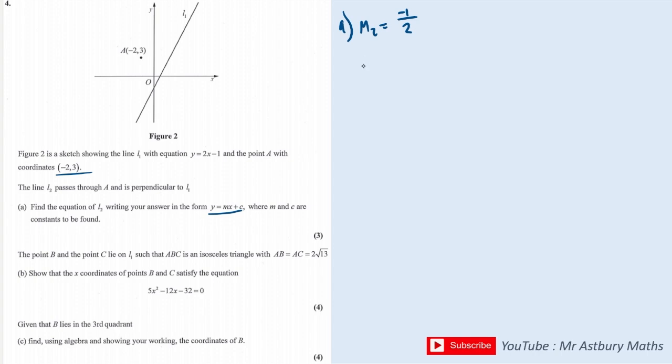And we know a point already, so we do y minus y1, which is 3, is equal to mx minus x1, which is minus 2. So let's simplify this. Multiply up these brackets, because they want it in y equals mx plus c. So minus a half x, and that's plus 2, times 1 minus a half is minus 1. So y is equal to minus a half x, add the 3 over, plus 2. Straightforward that.